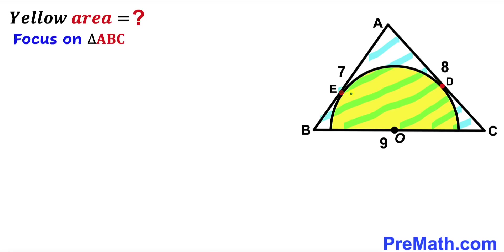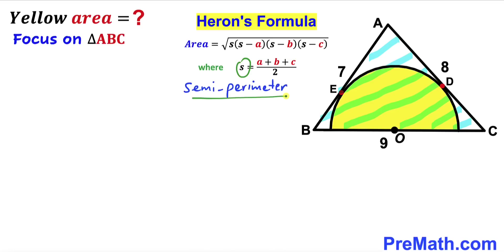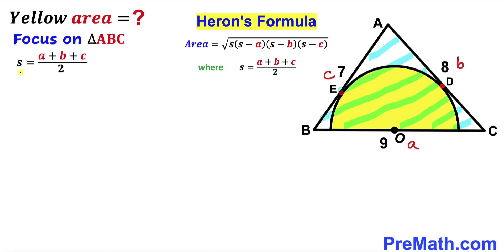Let's get started. Our very first step is to calculate the area of triangle ABC using Heron's formula: Area = √(S · (S−a) · (S−b) · (S−c)), where S = (a + b + c) / 2 is the semi-perimeter. Let me label the sides: side BC as lowercase a, side AC as lowercase b, and side AB as lowercase c.